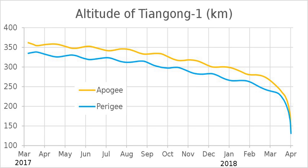If left unchecked, the decay eventually results in termination of the orbit when the smaller object strikes the surface of the primary, or for objects where the primary has an atmosphere, the smaller object burns, explodes, or otherwise breaks up in the larger object's atmosphere, or for objects where the primary is a star, ends with incineration by the star's radiation.